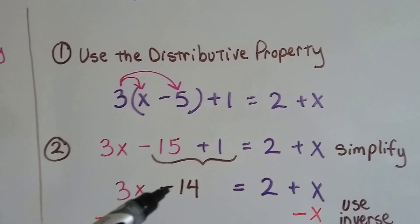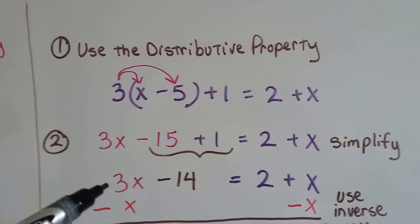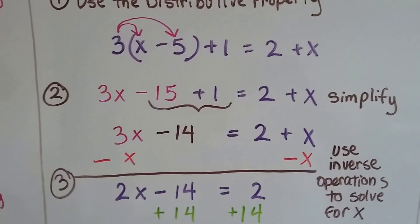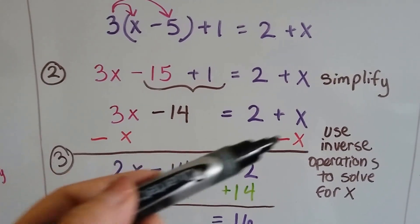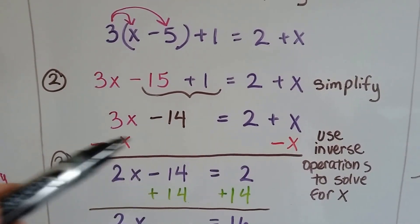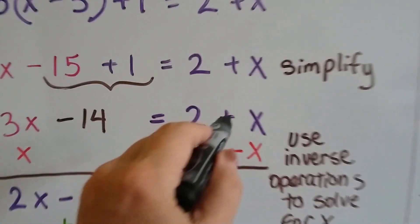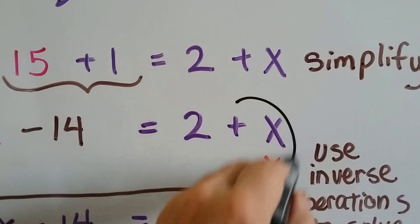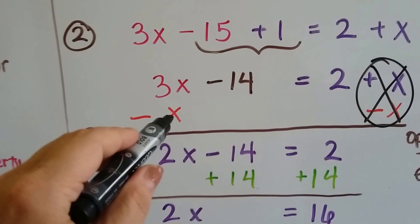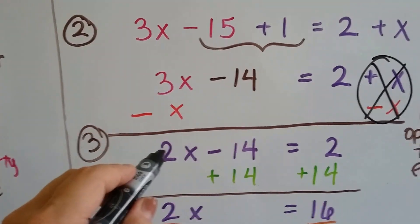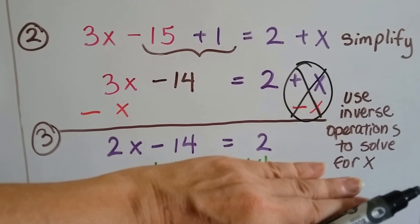Now we combine like terms and simplify. Negative 15 plus 1 is negative 14. Now this is our equation. We can start using inverse operations to solve for x. We have a positive x on the right side, so we take away x from each side — that creates a zero pair and they cancel out. 3x take away x is 2x, so our equation is now 2x minus 14 equals 2.